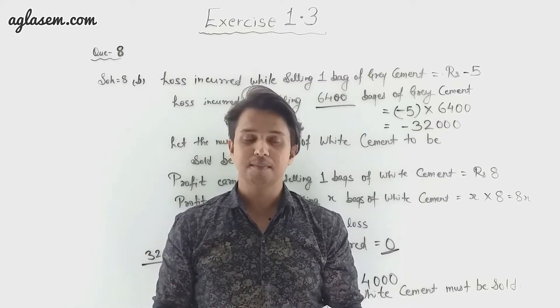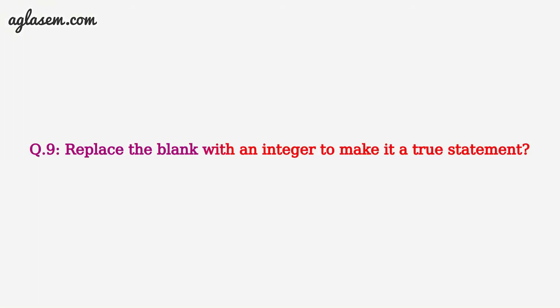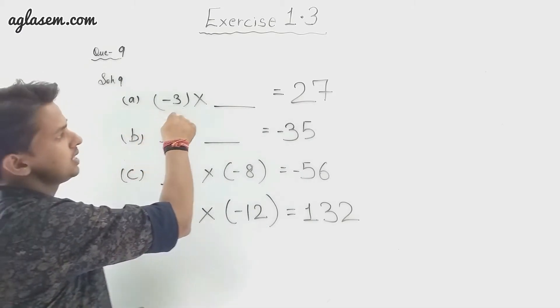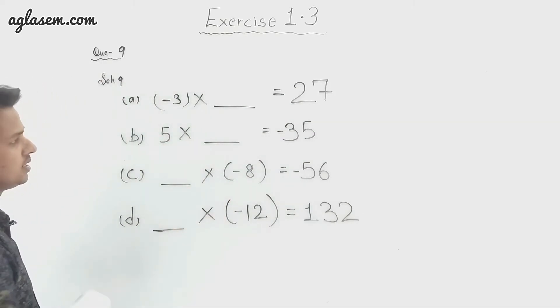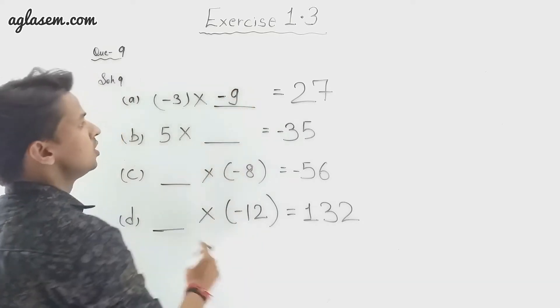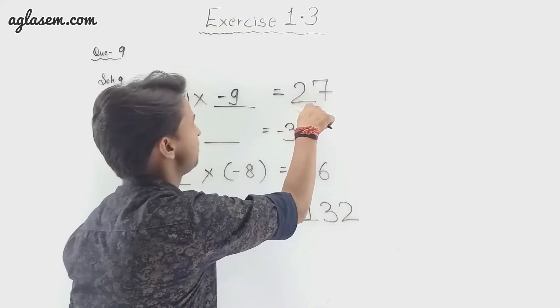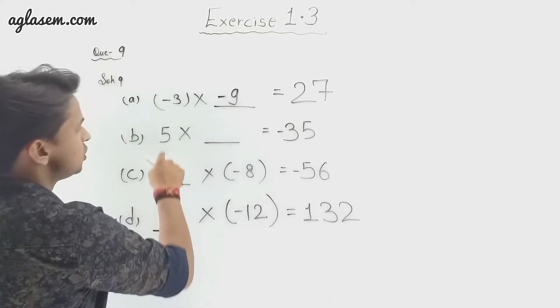Now moving to Question Number 9: replace the blank with an integer to make the statement true. Part a: minus 3 multiplied by blank equals 27. We fill in minus 9, because minus 3 multiplied by minus 9 equals positive 27, since minus times minus makes plus.